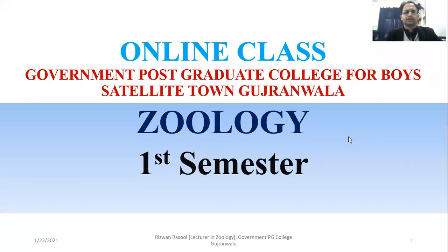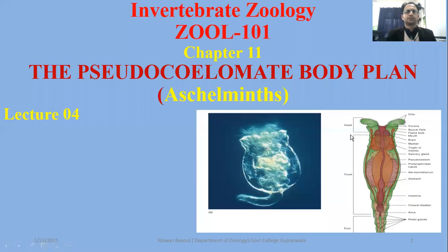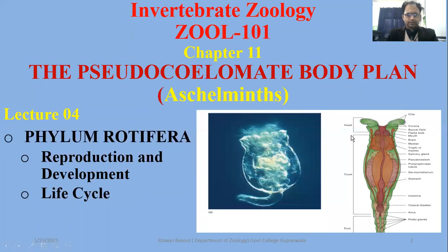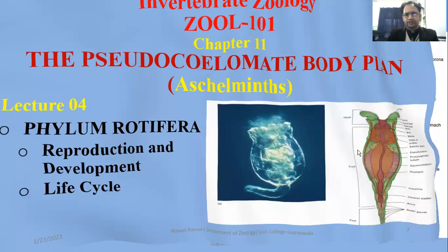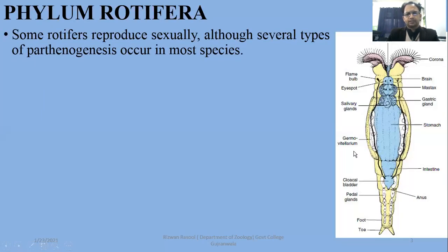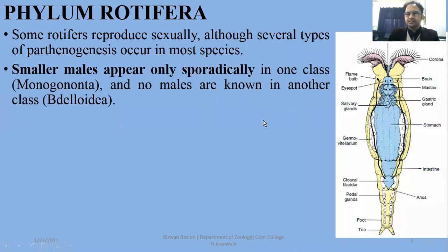In this portion we are going to have some discussion about the third part of rotifera — reproduction or development as well as their life cycle. Rotifers reproduce asexually; the process used currently is parthenogenesis. Genetically smaller males appear only occasionally in class Monognota.